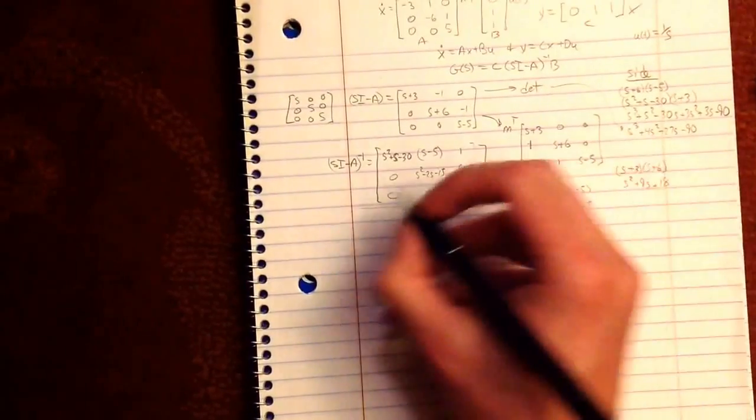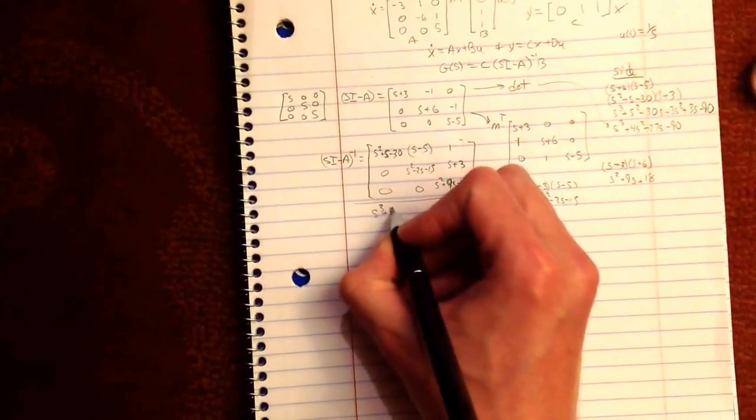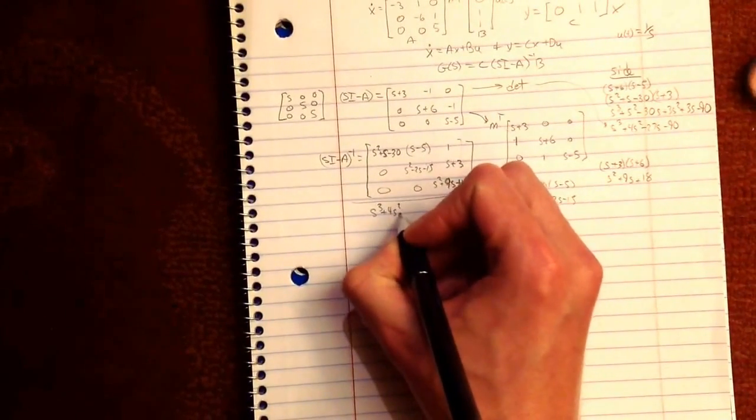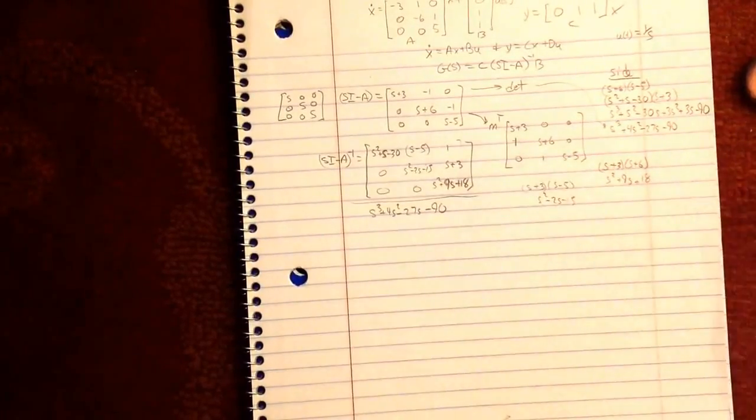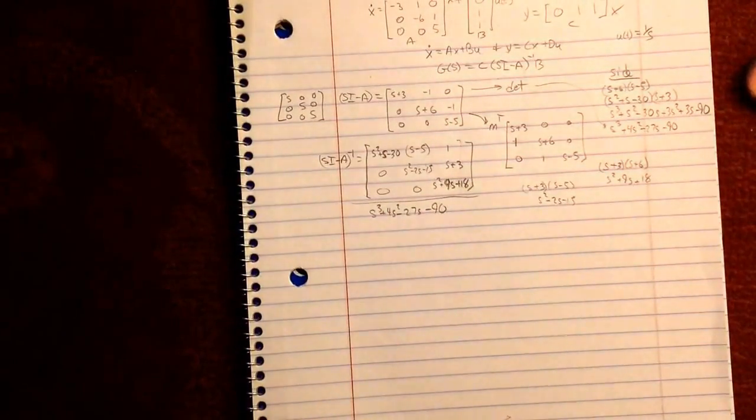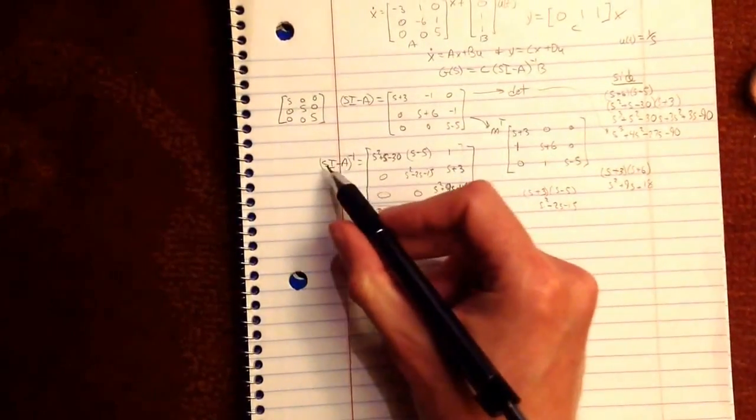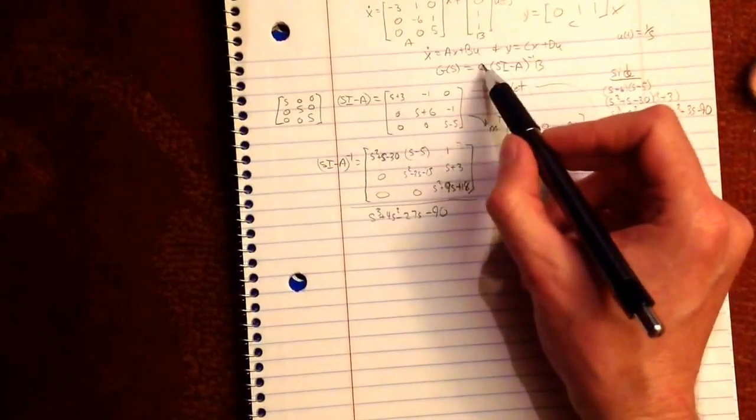So this is over the determinant. That guy. Oof, still going, man. Okay. So now we take, we've got this. Good. Now we multiply it by C.